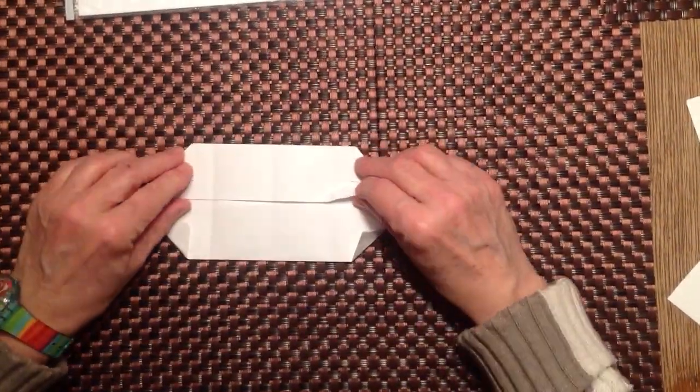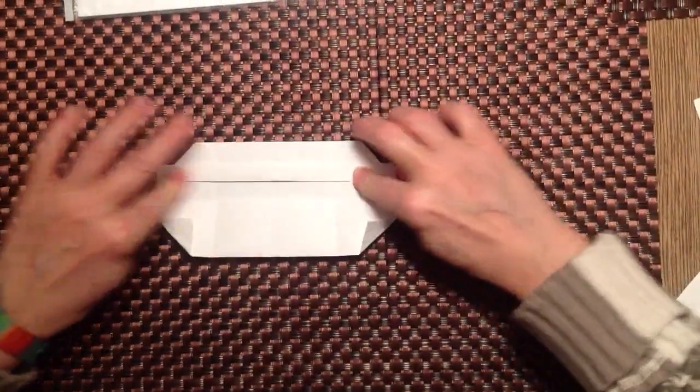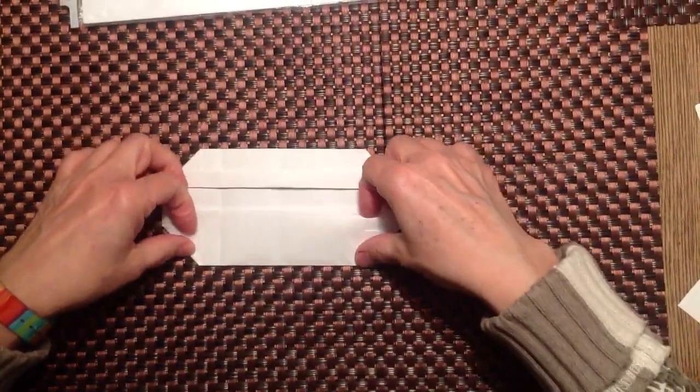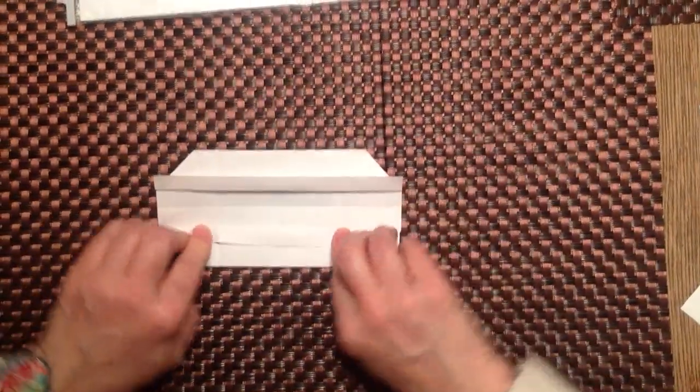Now then what we're going to do is we're going to fold the edges over the middle, over this middle part over these little triangles. Okay?